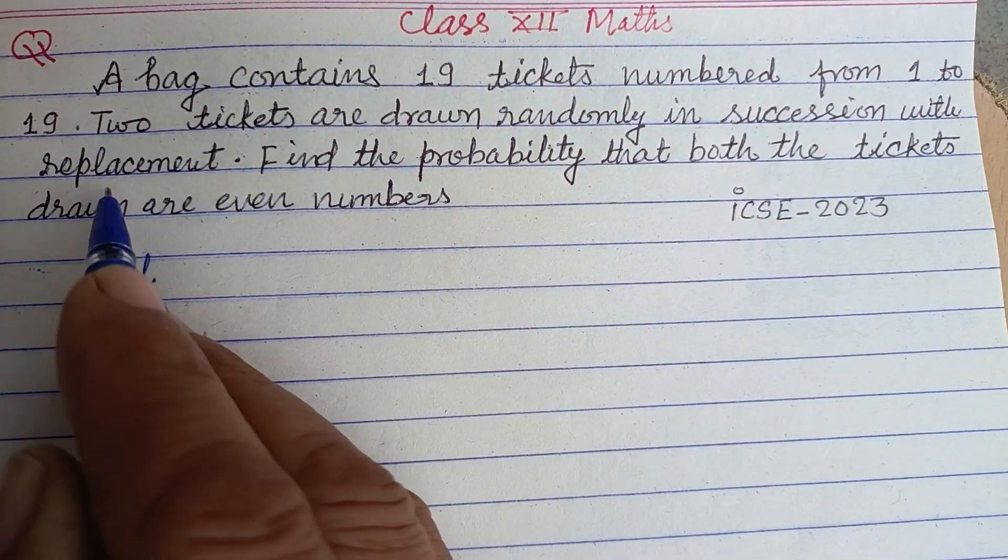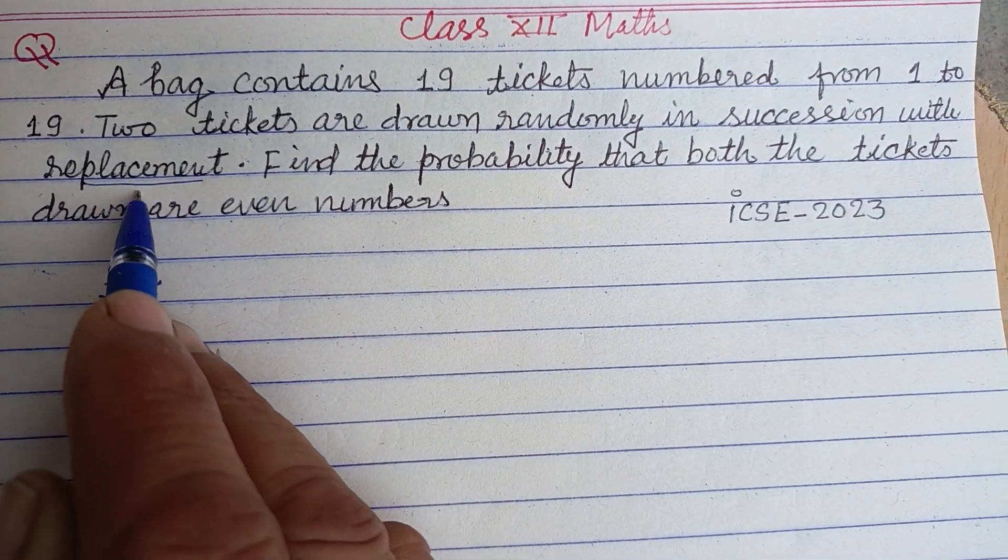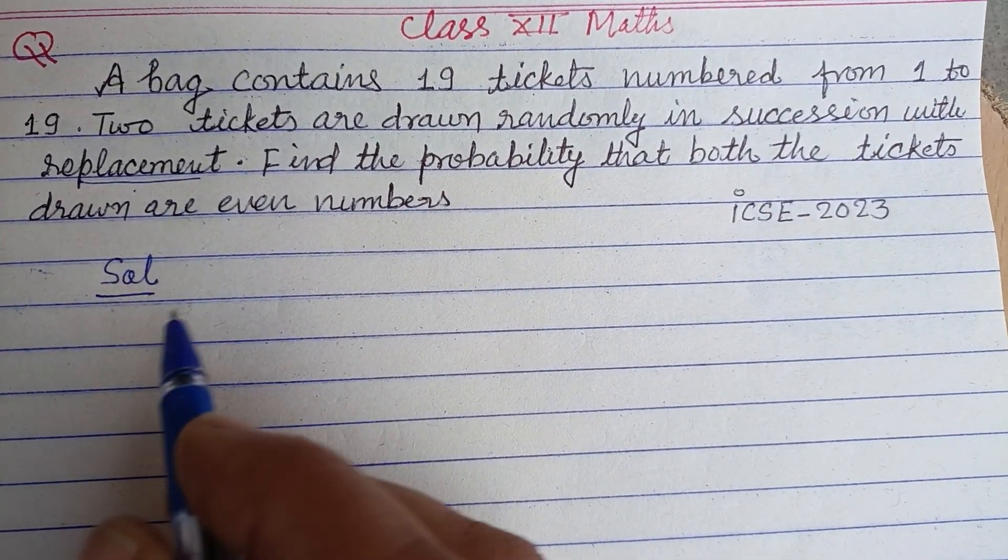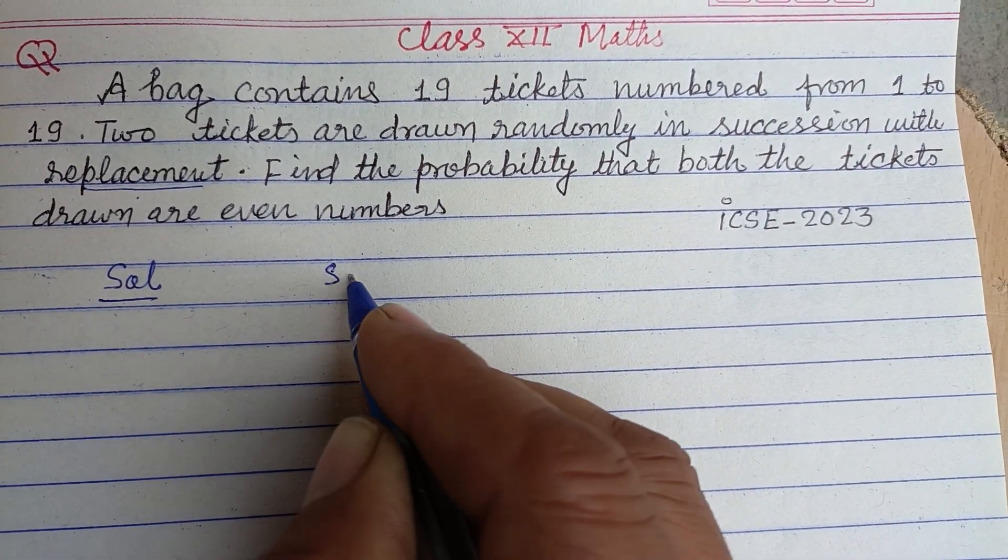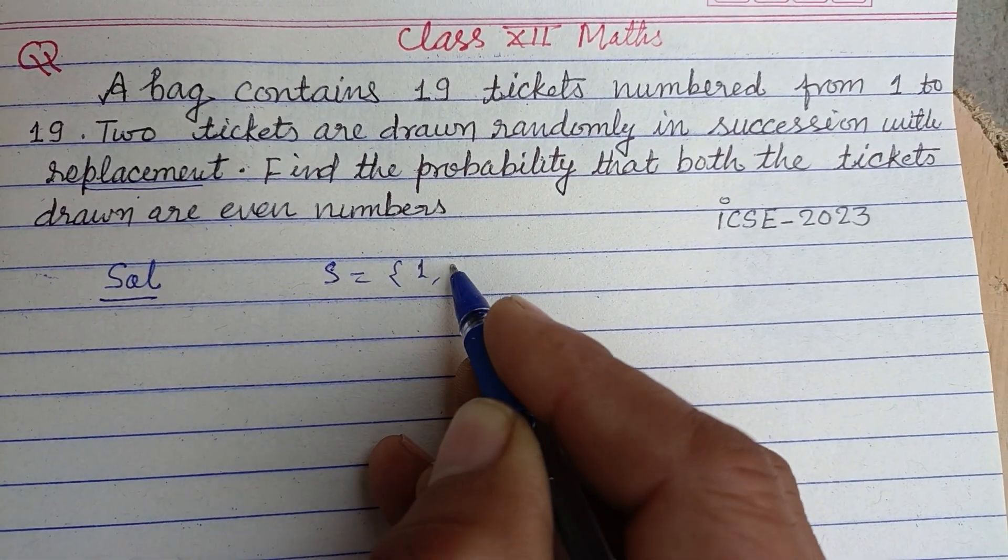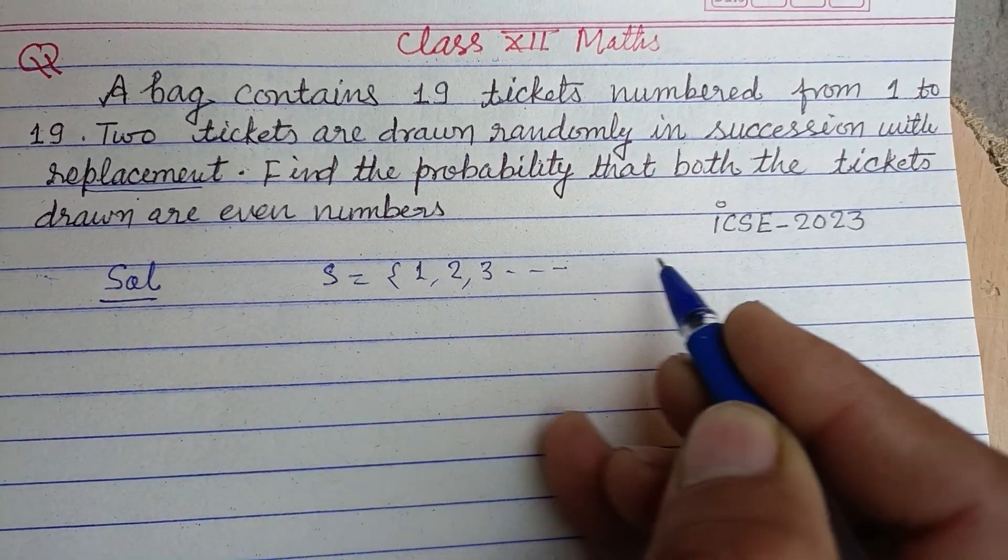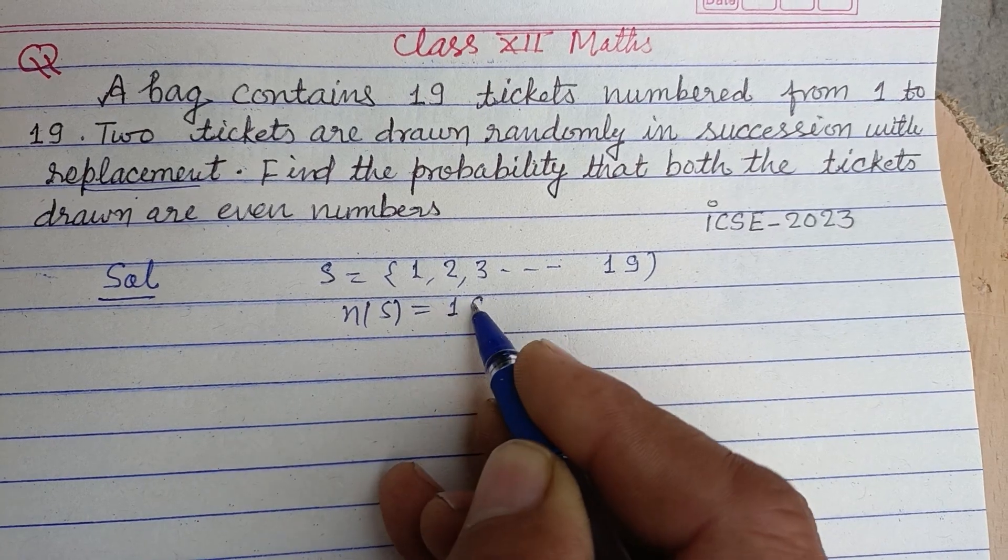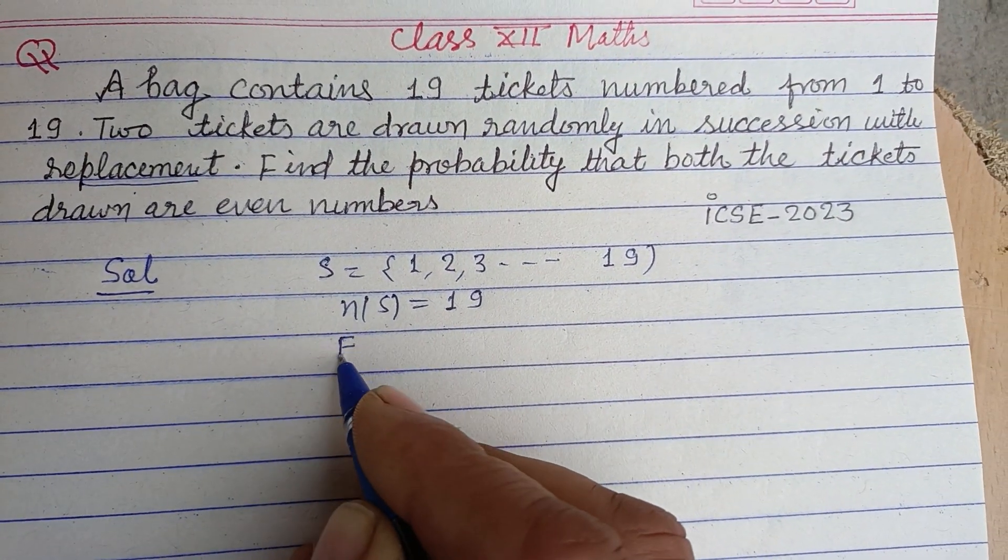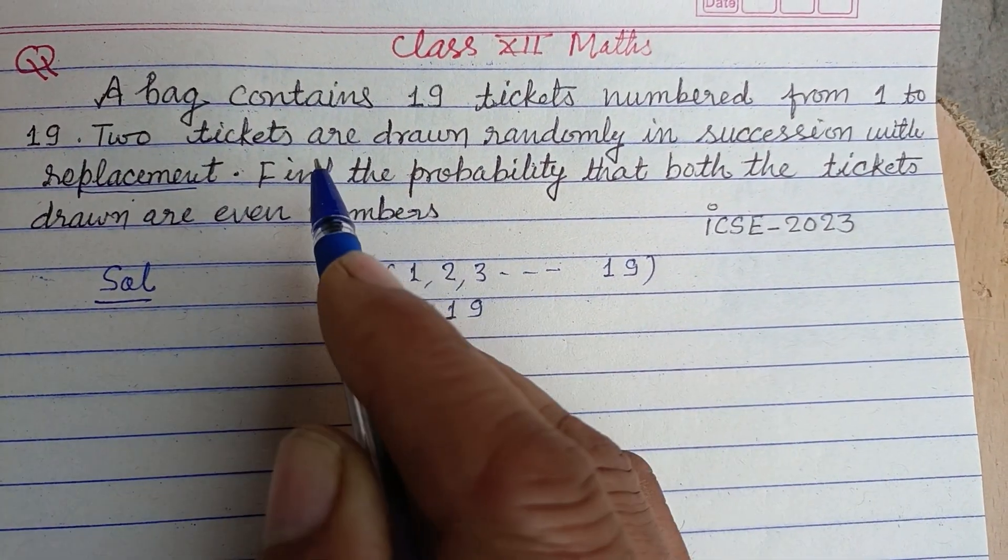Given that succession with replacement - the replacement word is important here. So the tickets are S = {1, 2, 3, ..., 19}, so n(S) = 19. E is the favorable event, which are the even number tickets.